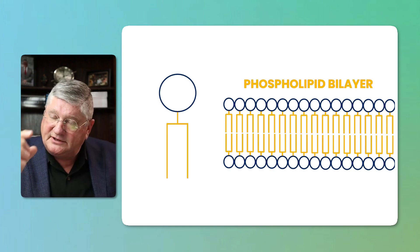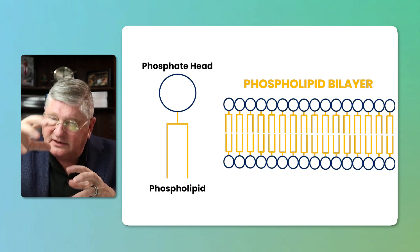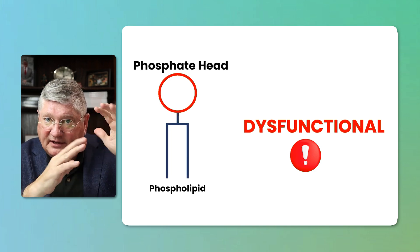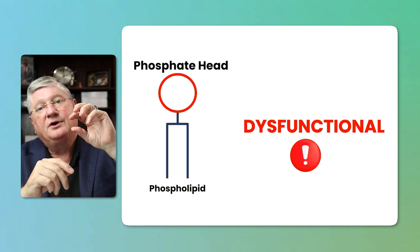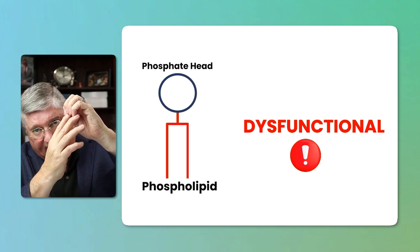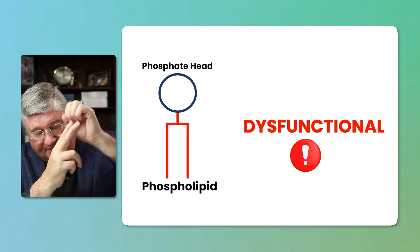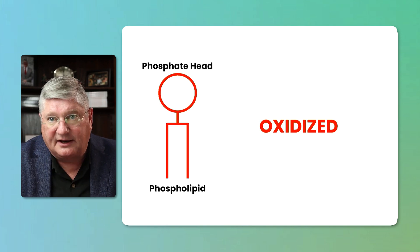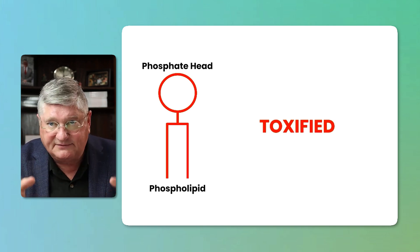The other thing that can happen is that the phospholipid and the phosphate head can become dysfunctional — either through the phosphate head's interaction with free radicals or through the phospholipid coming together. Remember, it's a phosphate head and two lipids. That can become inflamed, oxidized, or toxified. A damaged phospholipid leads to bad cell membrane activity, which leads to disease.